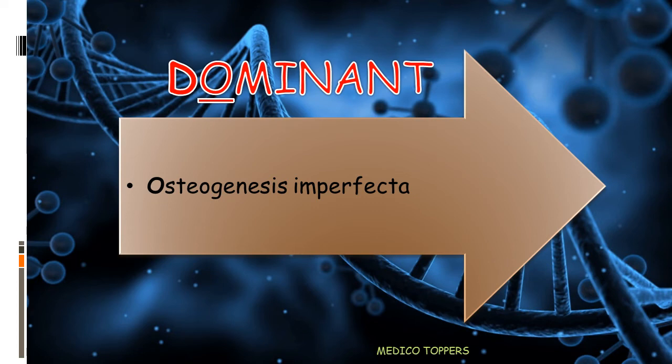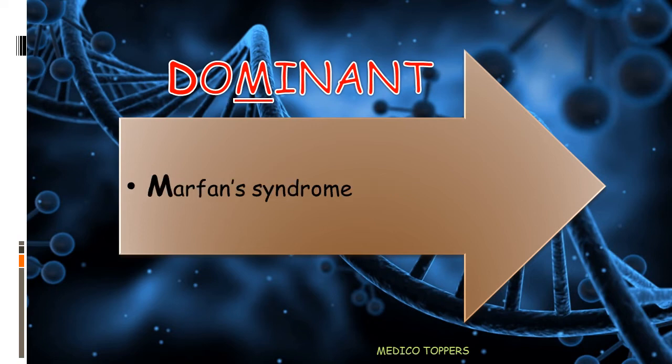'O' in Dominant stands for Osteogenesis Imperfecta, where there is a problem with type 1 collagen, mainly the alpha-1 and alpha-2 chains. 'M' in Dominant stands for Marfan syndrome, where the problem is in the fibrillin gene.